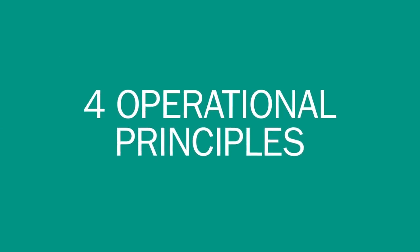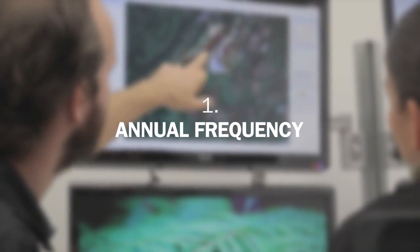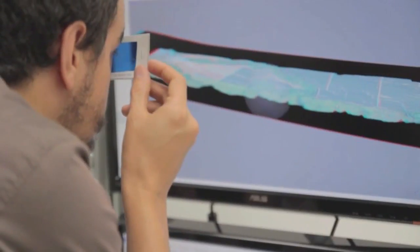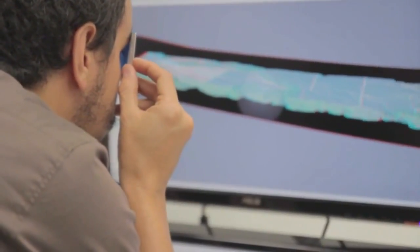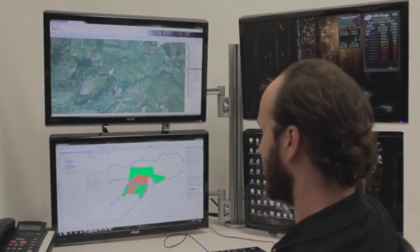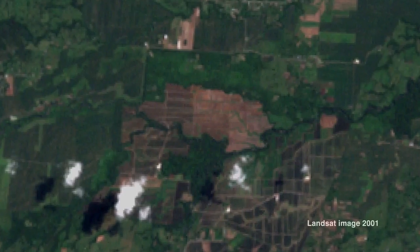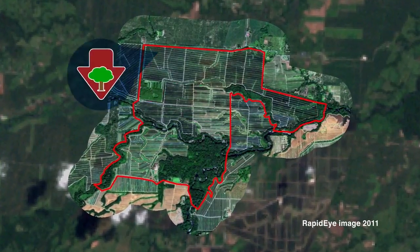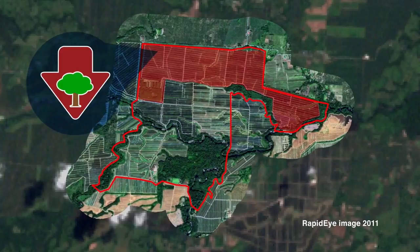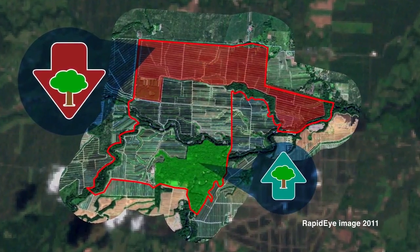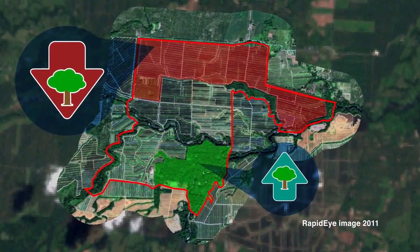The system is based on four operational principles. The first is annual frequency. Every year, images of productive landscapes in Costa Rica suffering from agricultural expansion into natural habitat are processed. The result is an image that shows polygons of the area where a potential environmental infringement or an increase in vegetation cover has been identified during that year.